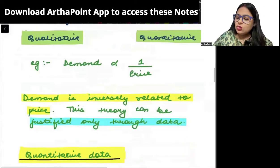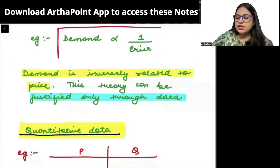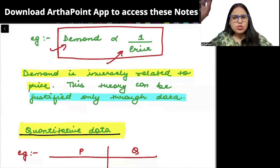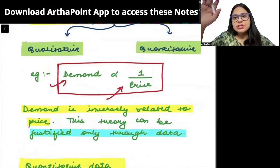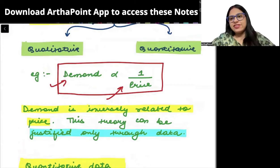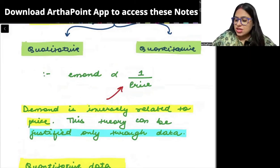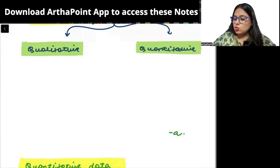For example, I know that there is an inverse relationship between demand and price. But there might have been some time when people didn't know about the law of demand. Suppose at that time I don't know the relationship, I don't know law of demand.